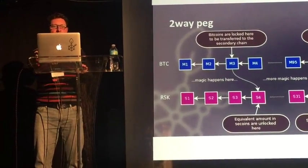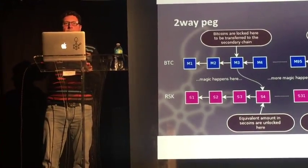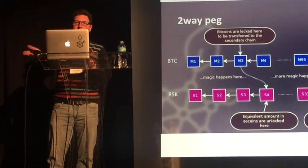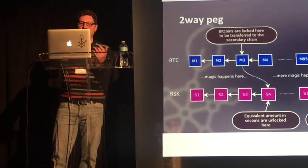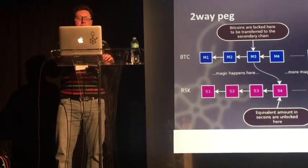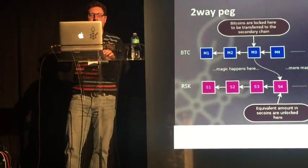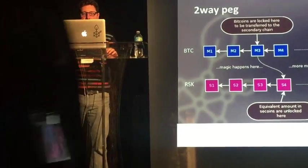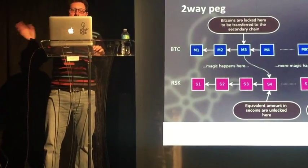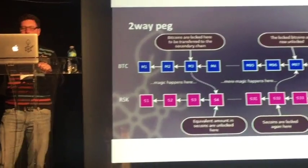So, what is a two-way peg? It's a mechanism to transfer funds from one blockchain to another, and then send them back from the secondary blockchain to the main blockchain. In our case, you can lock Bitcoins at a specific block, and they will sometime later appear on the RSK blockchain. And then, if you want to send them back to Bitcoin, you lock them on the RSK platform, and they will magically appear back on the Bitcoin blockchain.